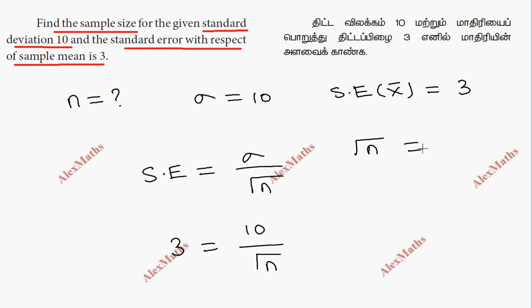Root n equals 10 divided by 3. Squaring both sides, n equals 100 divided by 9, which is 11.11.